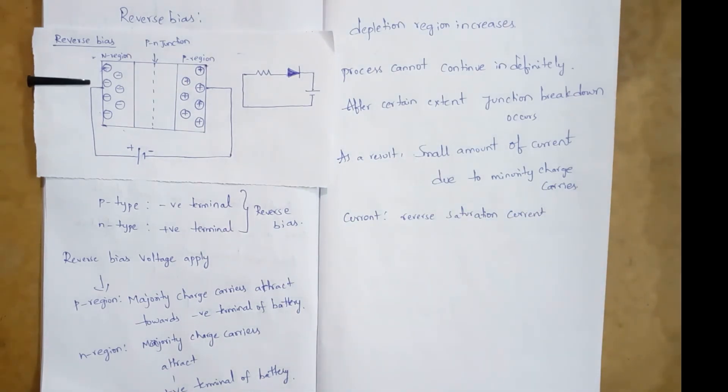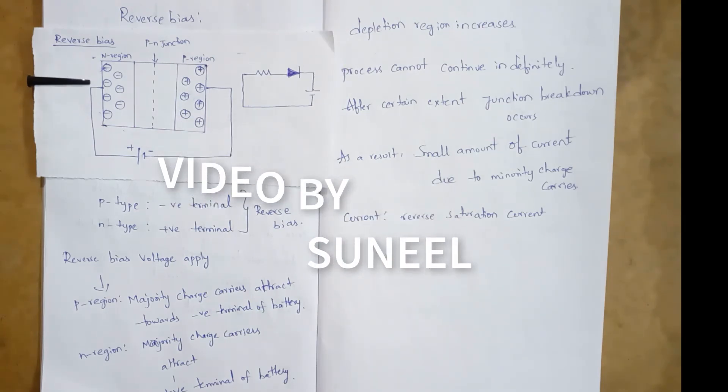This is about forward bias and reverse bias of a PN junction diode.